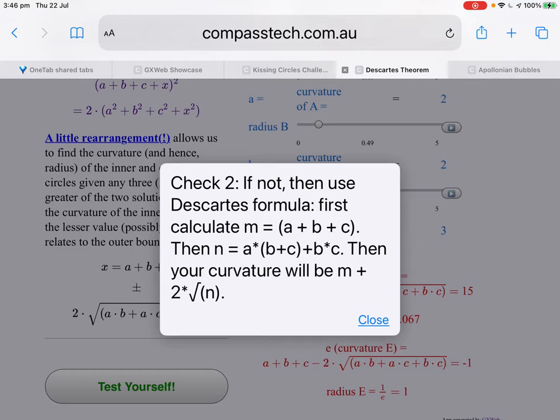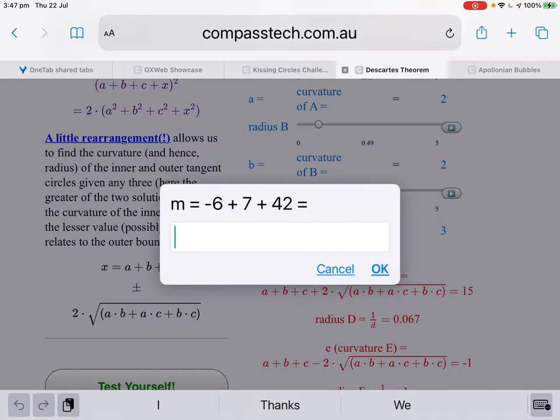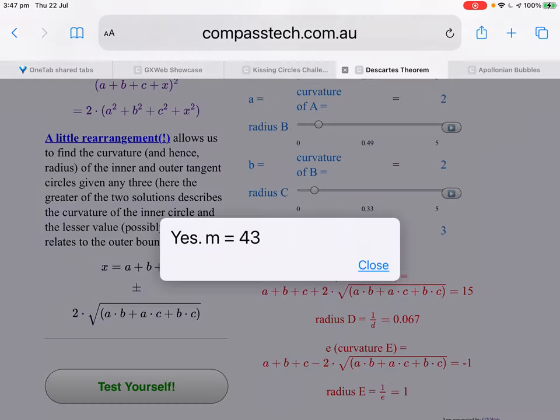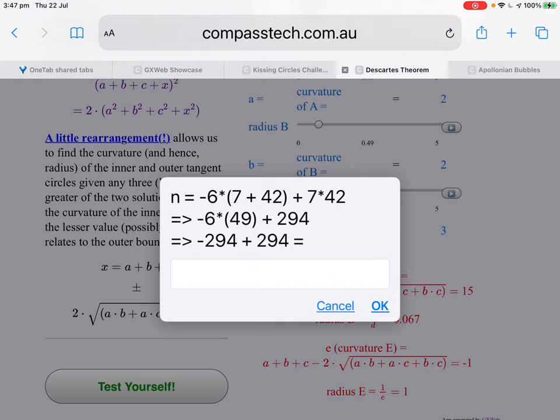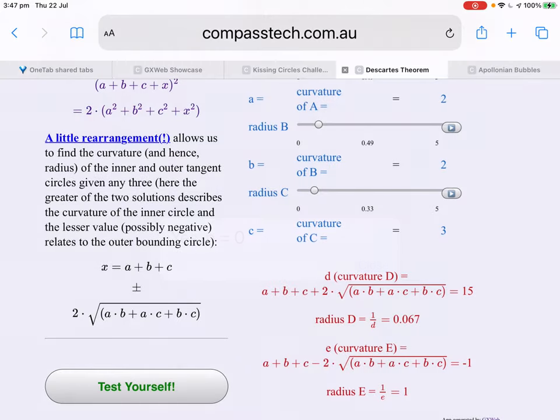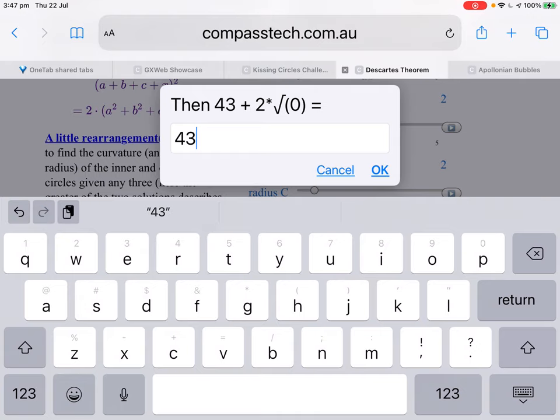But I've broken the formula down into two parts to make its calculation easier. First calculate the sum of a, b and c, and then the sum of the product, ab, ac and bc. Then your curvature will be m plus 2 root n. Let's see what that means. So our three numbers, minus 6, 7 and 42, add them up. Minus 6 plus 7 is 1. So 42 plus 1, 43. The next part, and I've broken this down because it's quite hard to do in your head. Minus 6 times 7 plus 42, which is 49, plus 7 times 42. Right, it turns out to be minus 294 plus 294, which is zero. Then 43 plus 2 root zero is 43.